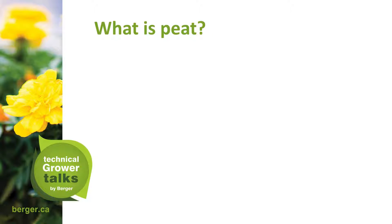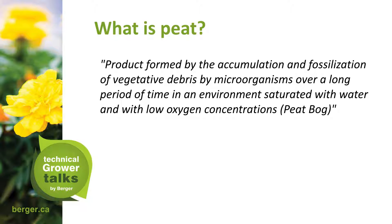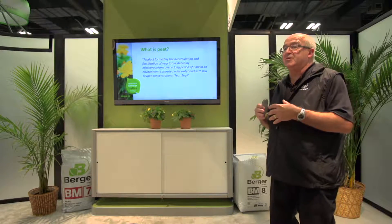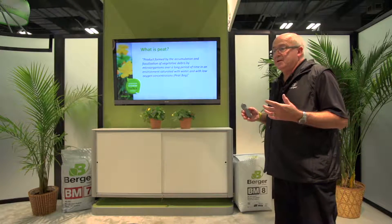What is peat? It's a product formed by the accumulation and fossilization of vegetative debris by microorganisms over a long period of time in an environment saturated with water and low in oxygen — basically a peat bog. Until ditches are put in to remove the water, it's very slow anaerobic decomposition. Once the ditches are in and harvesting begins, it's just that upper half inch to inch that dries daily and is harvested, but decomposition speeds up under aerobic conditions.